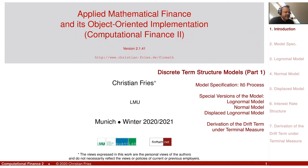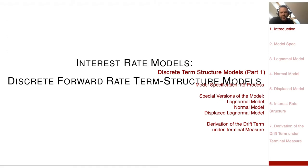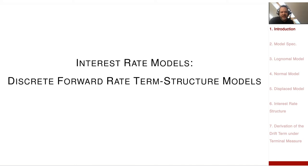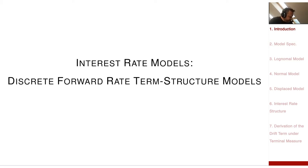In today's session on applied mathematical finance, I'd like to start with big interest rate models. I call this section 'discrete forward rate term structure models' — that's just a different name for a famous model, formerly known as the LIBOR market model.